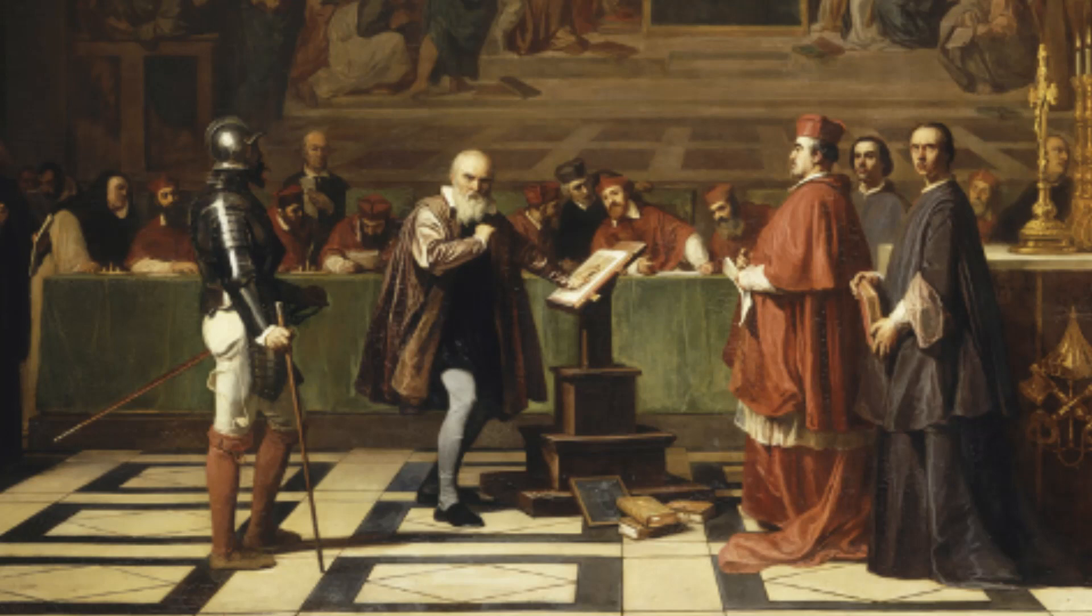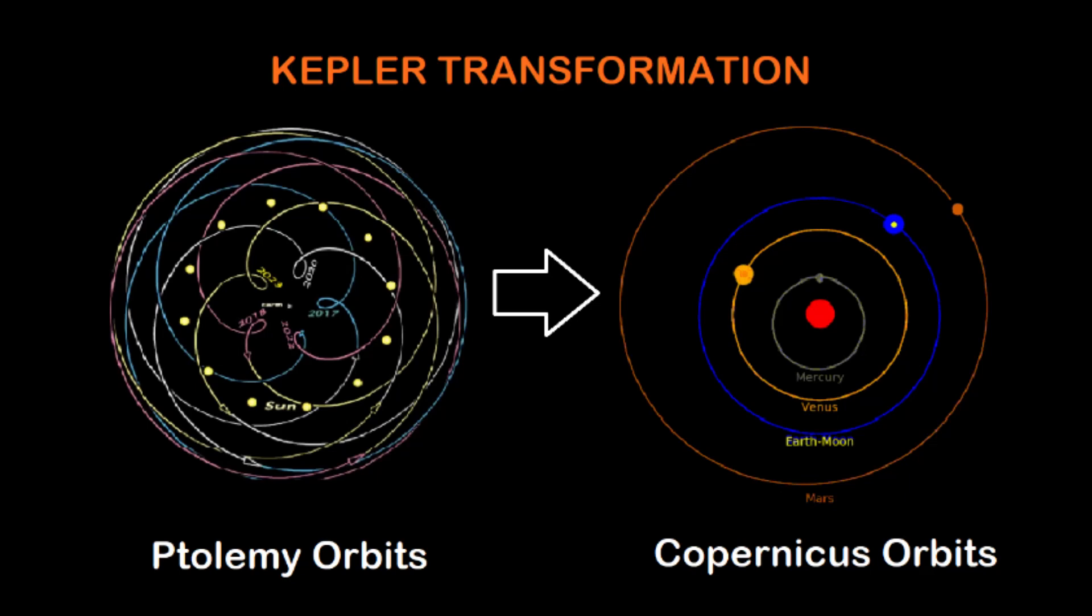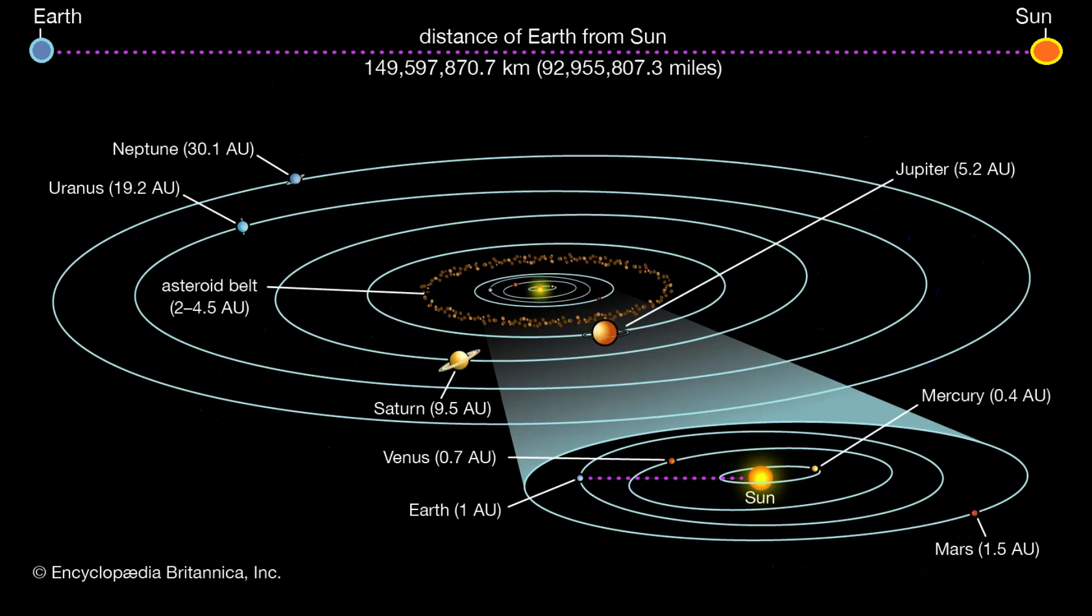Relatively speaking, Galileo's punishment was mild, life in prison. Eventually, the Sun-centric idea was adopted by Kepler, who was able to mathematically transform the observed orbits on Earth into the coordinate with the Sun as its origin.